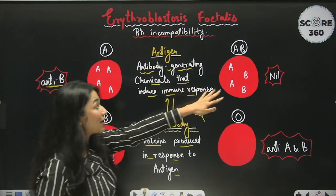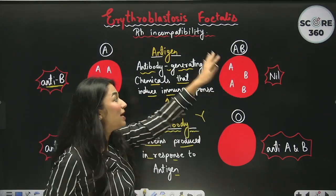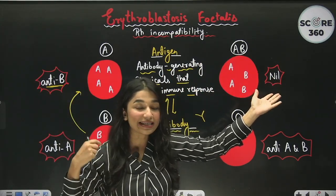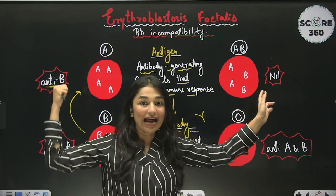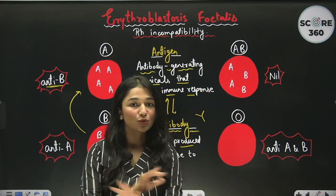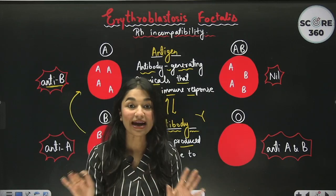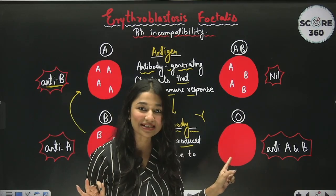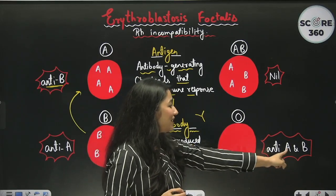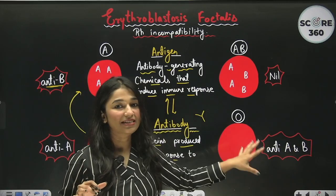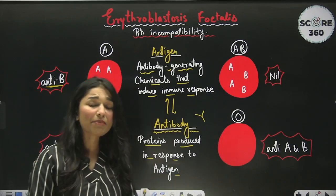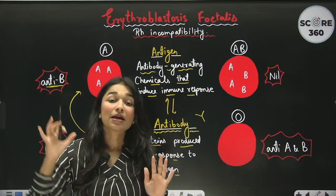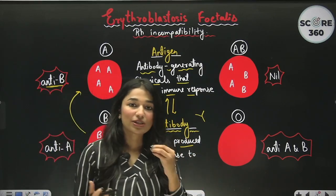If antigen A and B both are present on the surface, the blood group will be AB, and in that case no antibodies will be present at all — neither anti-A nor anti-B — because if any antibody remained, it would destroy those RBCs. On the other hand, if there is no antigen on the surface, the blood group is O, and in that case both anti-A and anti-B antibodies are present in the blood. This introduces the key concept of antigen-antibody interaction and how foreign antigens lead to immune responses that can destroy RBCs.